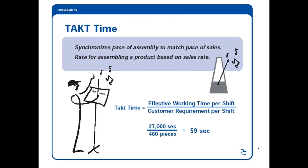One term you want to remember is takt time. The equation is simple: it's the effective working time divided by the customer requirements. So if you have 27,000 seconds in a particular shift and you have to make 460 pieces, you have 59 seconds to make each piece to get it out in time. If each step in the value stream completes its work in 59 seconds, then everybody's in sync and you're good.